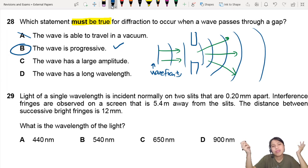Wave has a large amplitude. Larger amplitude, you can see clearer the pattern. But it's not a must-have. Long wavelength, long wavelength will diffract more, but it's not a must-have.